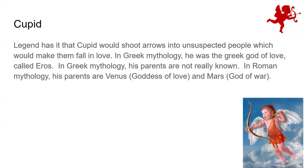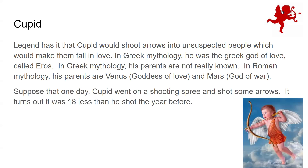Cupid is a popular figure in Valentine's Day lore. Legend has it that Cupid would shoot arrows into unsuspecting people, making them fall in love. In Greek mythology, he was the god of love called Eros, with unclear parentage. In Roman mythology, his parents are Venus, the goddess of love, and Mars, the god of war — which fits with him shooting arrows to make people fall in love. For the math: suppose Cupid went on a shooting spree and shot 18 fewer arrows than the year before. What expression represents this? The answer is y − 18.